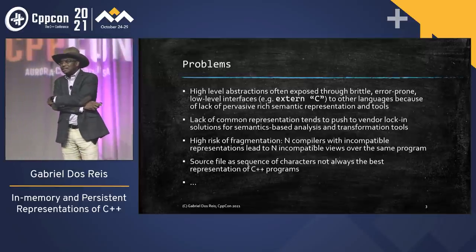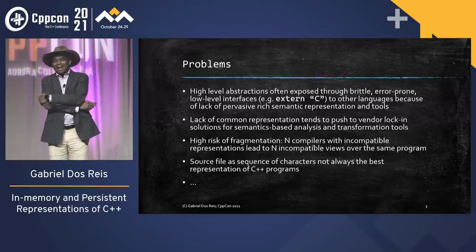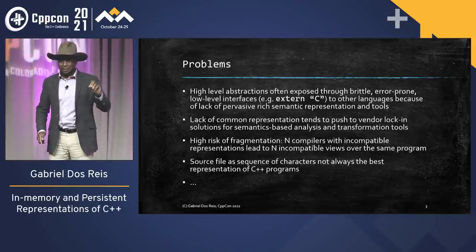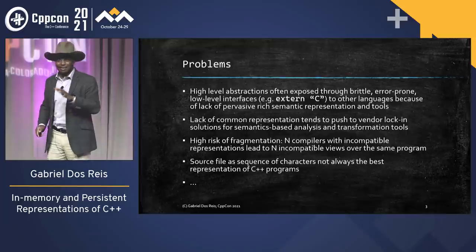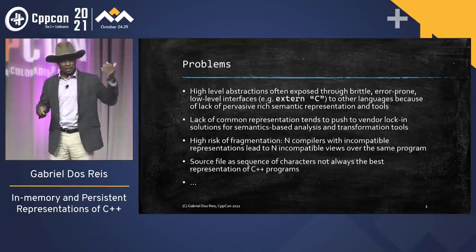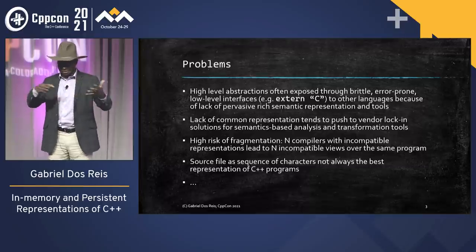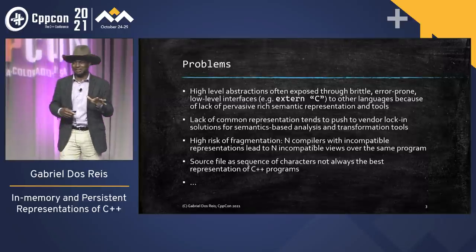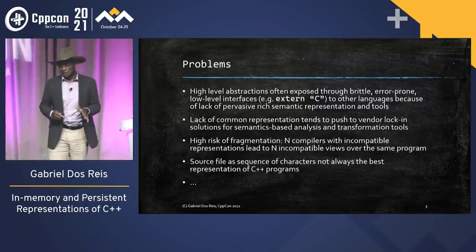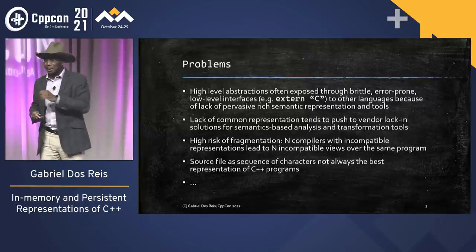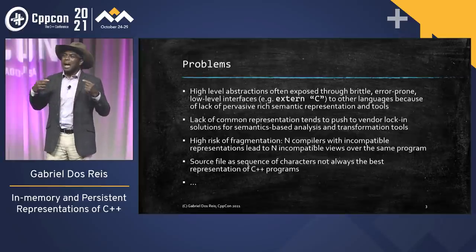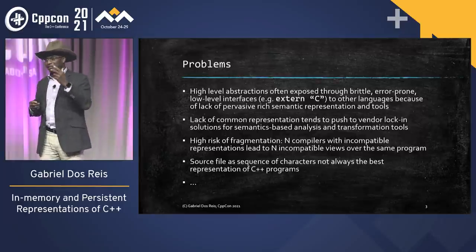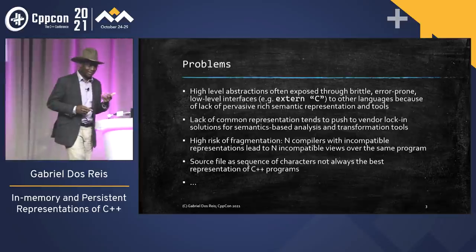Modules are great, but one side effect is that if each compiler defines its own metadata representation for modules, you end up with N compilers on your platform producing N different incompatible views of the same program. We like to use several compilers just to check we're doing things right. I don't think that can be said to be a good thing. The idea is not to force compilers to all adopt the same internal representation, but to have them offer the option of a common shared notation.